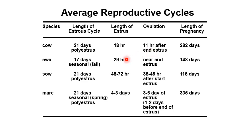For the ewe, ovulation occurs near the end of estrus. For the sow, ovulation occurs about 35 to 45 hours after the start of estrus, with an average of about 40 hours. For the mare, the estrus length is about 4 to 8 days, and ovulation will occur about 3 to 6 days into estrus, or 1 to 2 days before the end of estrus.